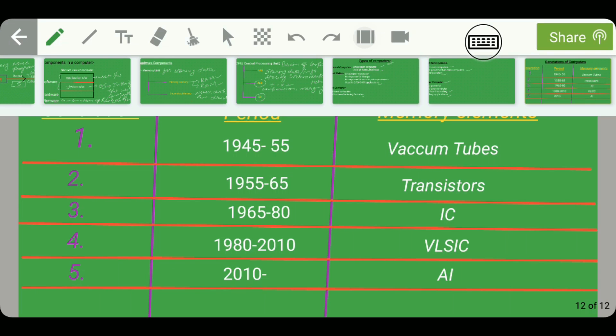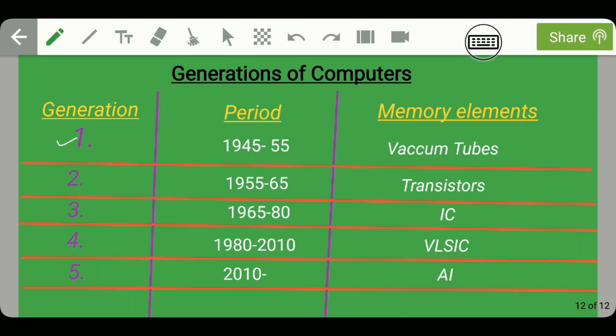Now let's discuss the different generations of computers. Talking about the first generation computers, it was in existence from the period 1945 to 1955 and the memory elements used were vacuum tubes. The third generation computers came in existence from 1965 to 1980 and the elements used in these computers were integrated chips.